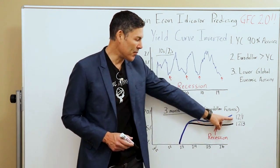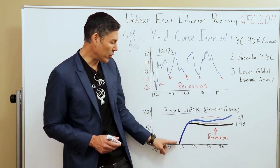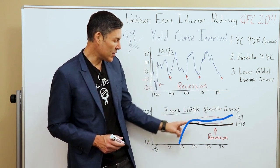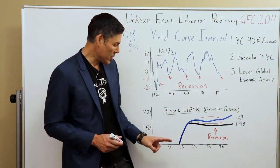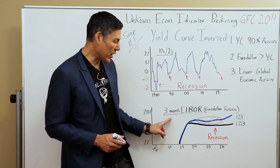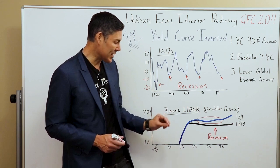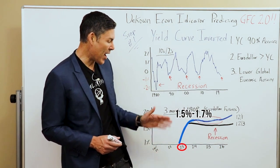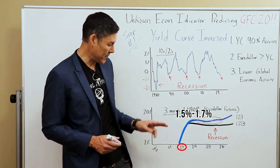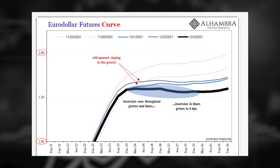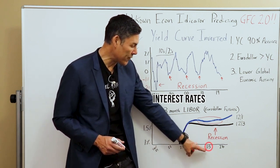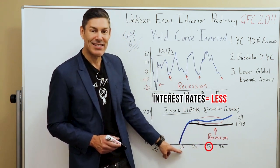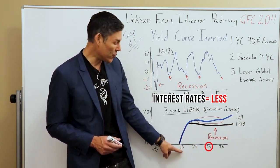As of December 1st, this blue line represents what that yield curve looked like. So three-month LIBOR rates — the market is predicting that in 2023 there'll be roughly 1.5% to 1.7%. On the left, we go from 1% up to 2%. But what it's showing us is that the interest rates in 2024 or 2025 will be less than they are in 2023.